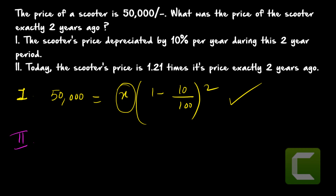From statement two, today's price is 1.21 times the price two years ago: 50,000 = 1.21x. Again, x is the only unknown, so you can find the solution from statement two as well. Either statement one or statement two is sufficient to answer the question — the answer is option D.